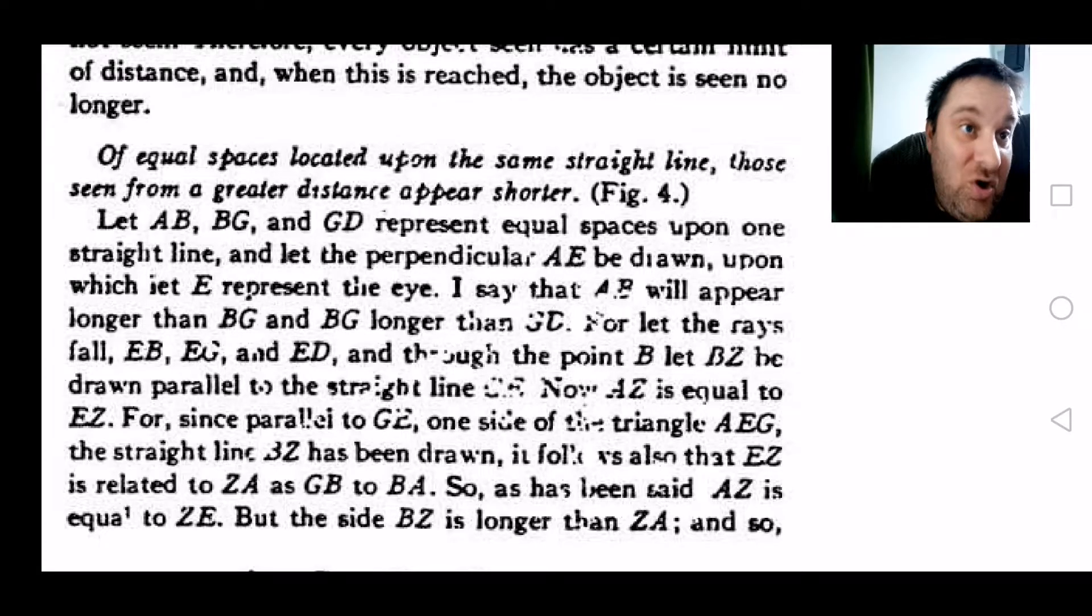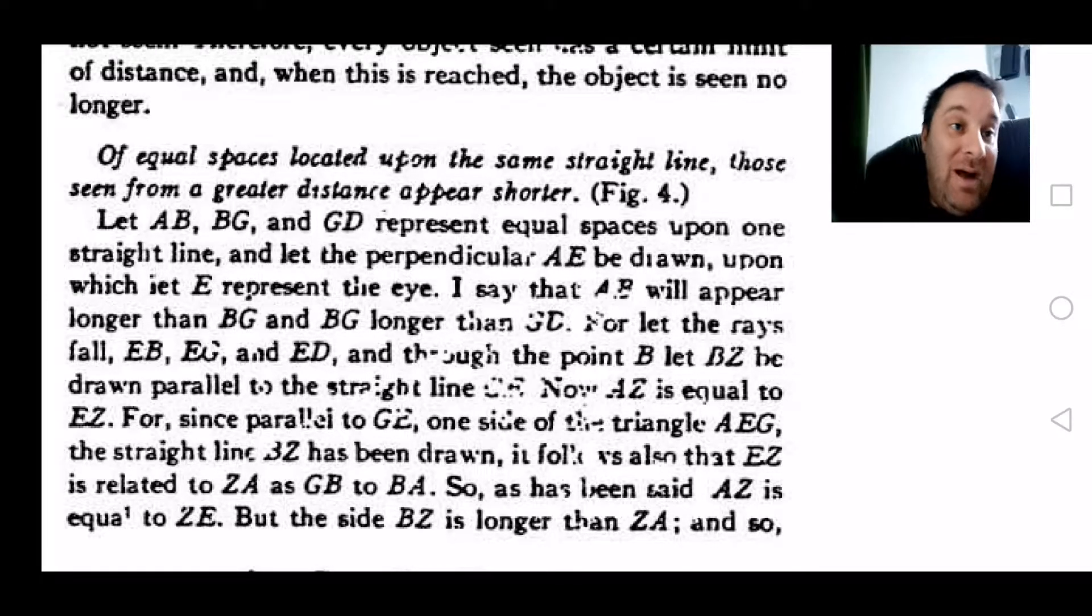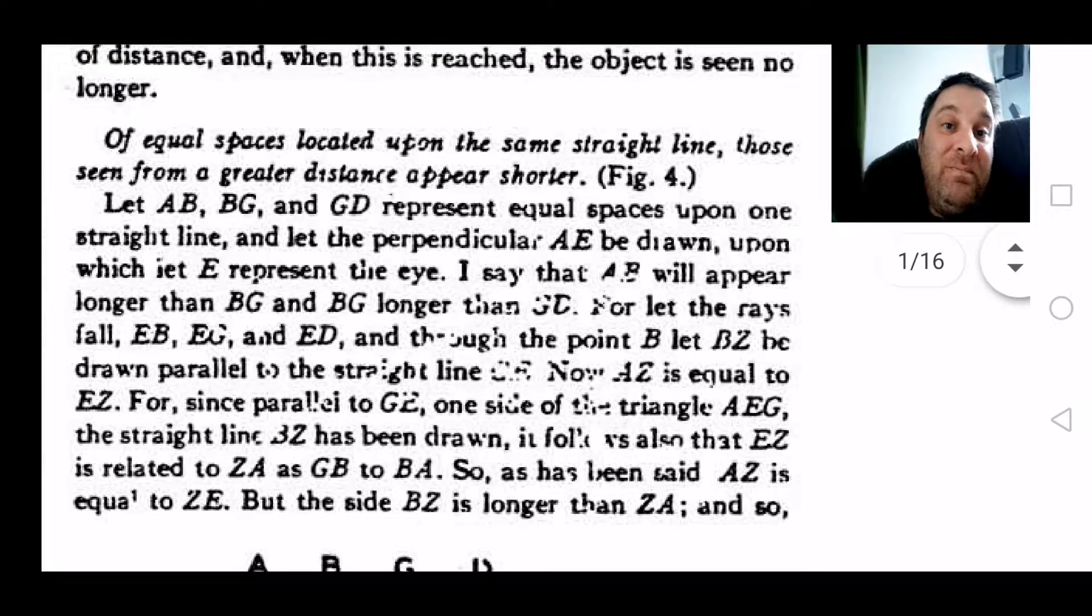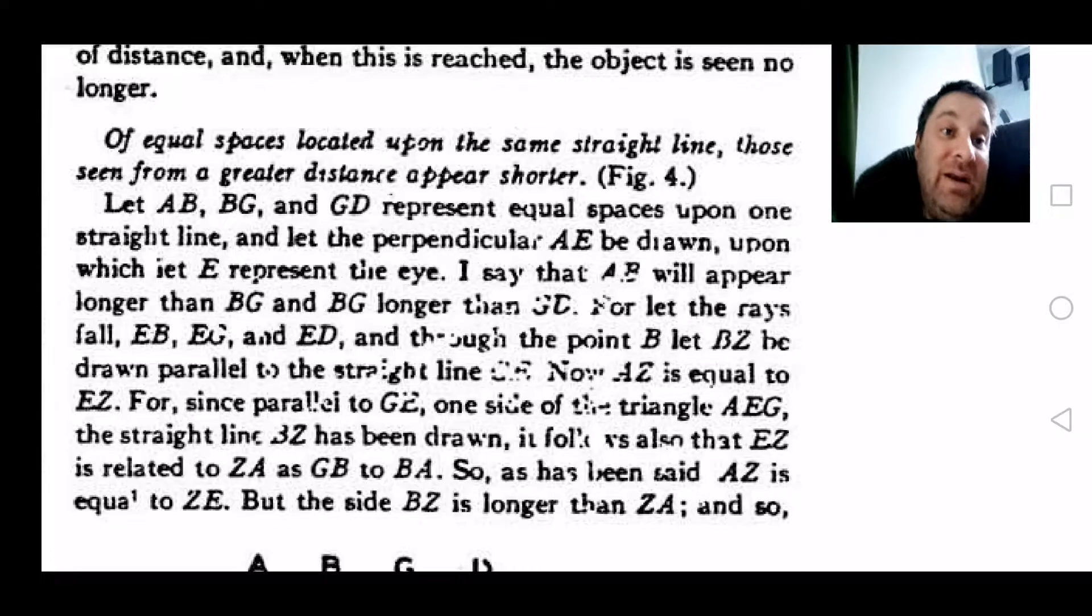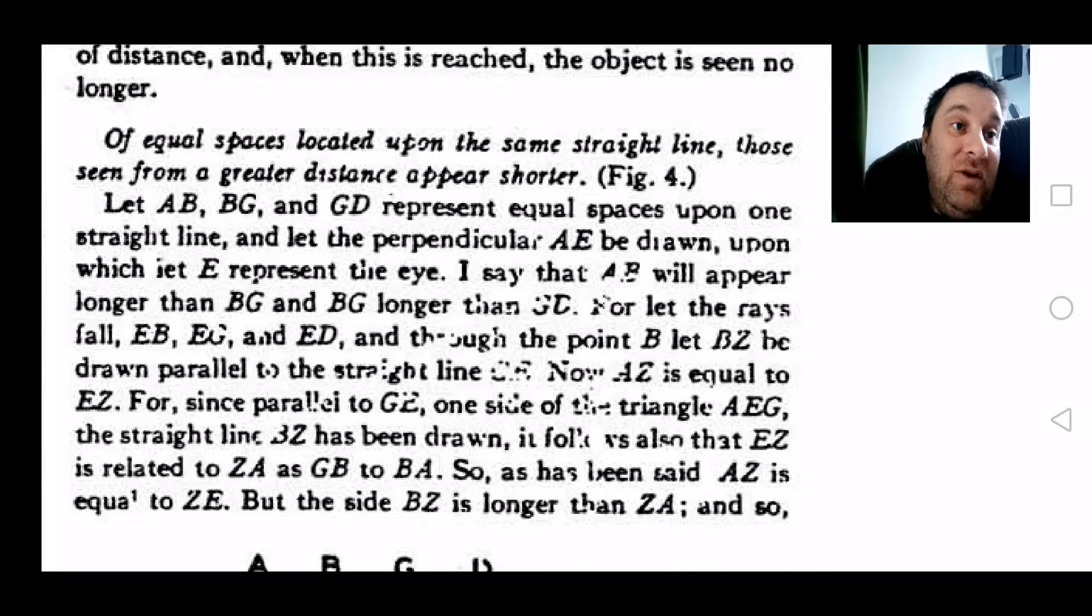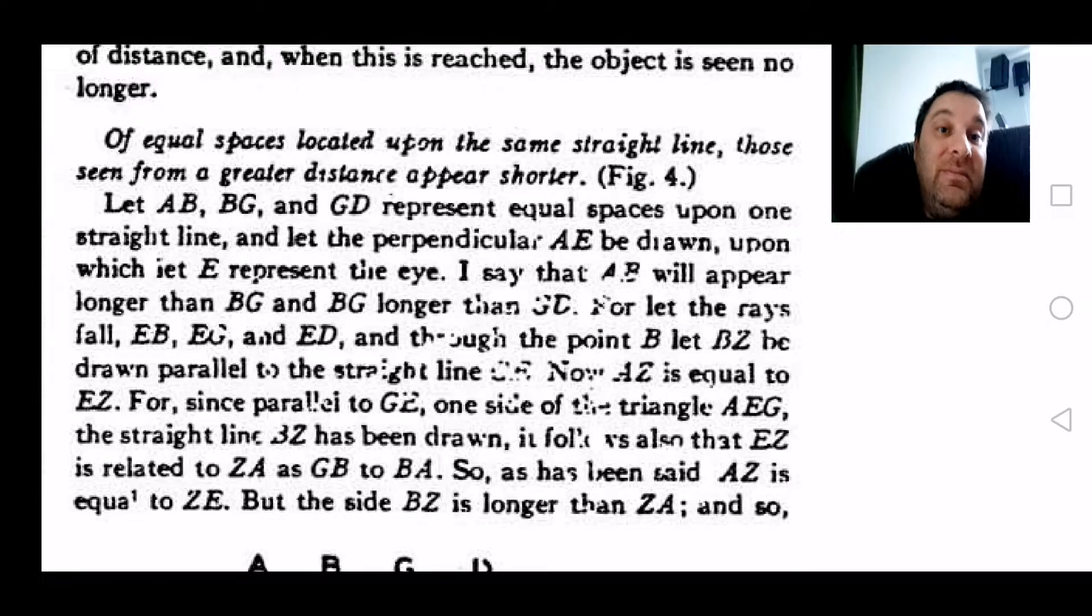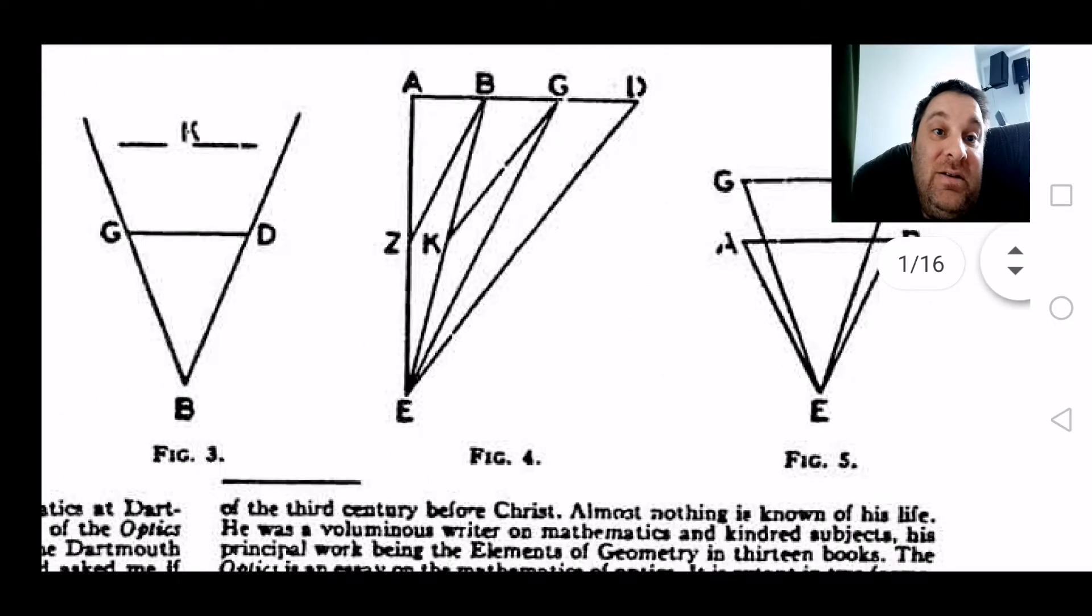They appear to get shorter as they get further away. This is just showing you we already know this happens. This is the math behind it, the geometry behind it, how your eyes perceive it that way. But we know that's not actually going on. We know they're all the same height all the way down the road.